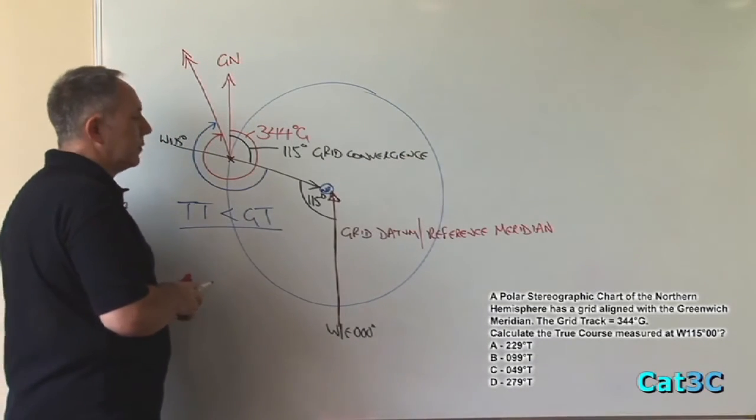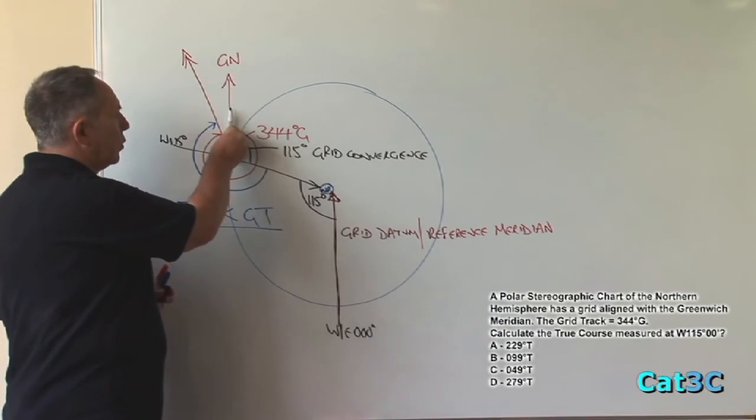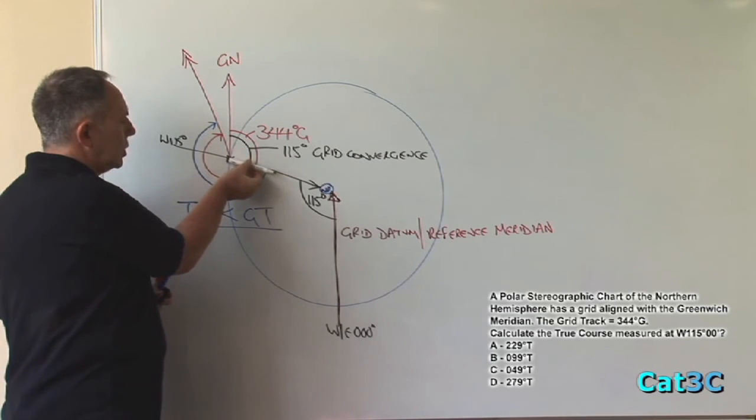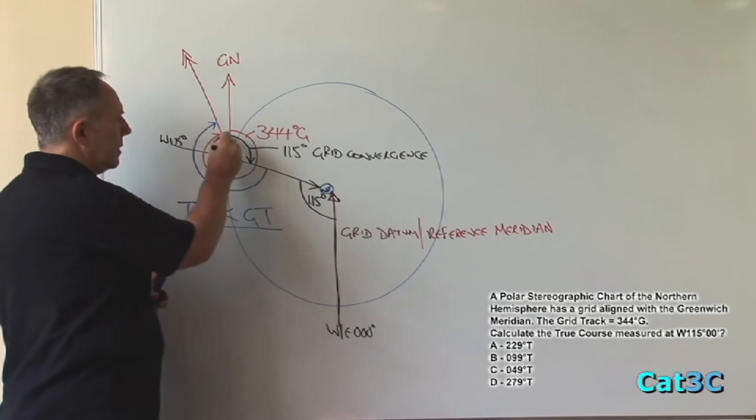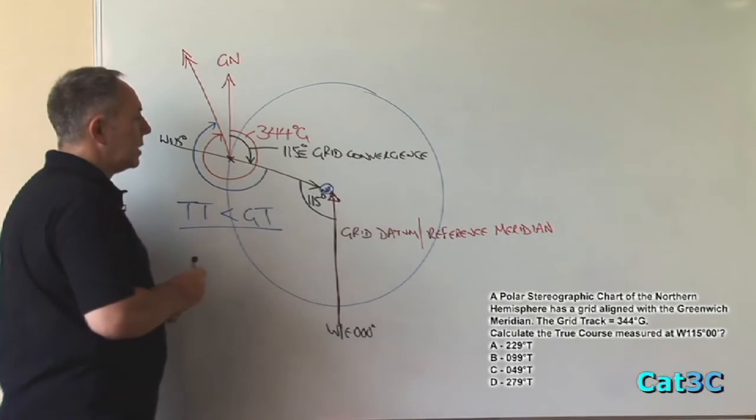The direction of grid convergence is from grid north to true north at the local meridian. So it's from grid to true, which we can see is to the east. So the actual value is 115 degrees east.